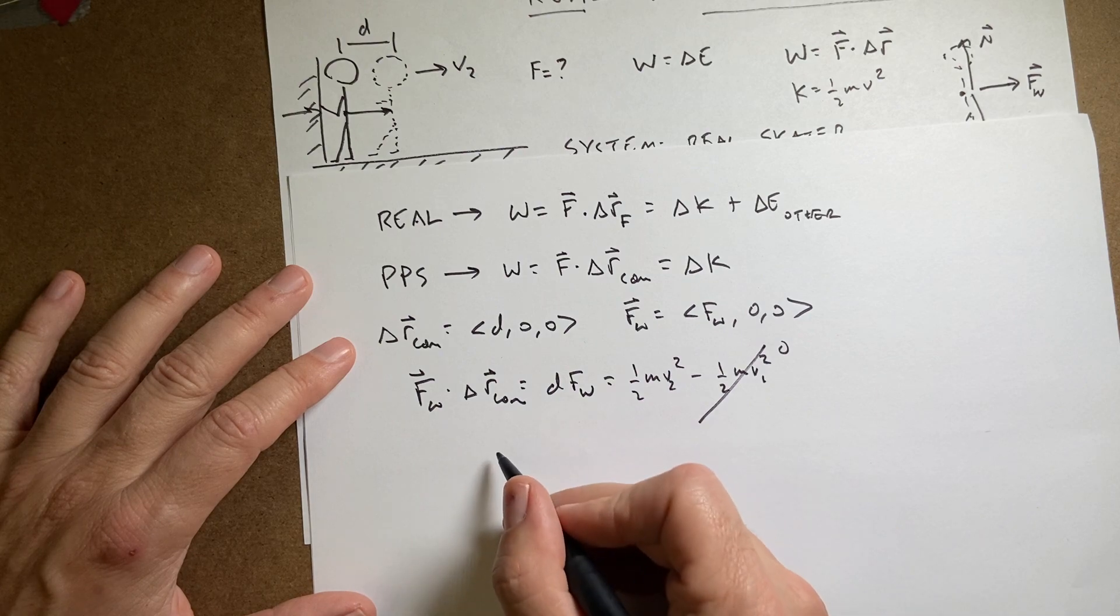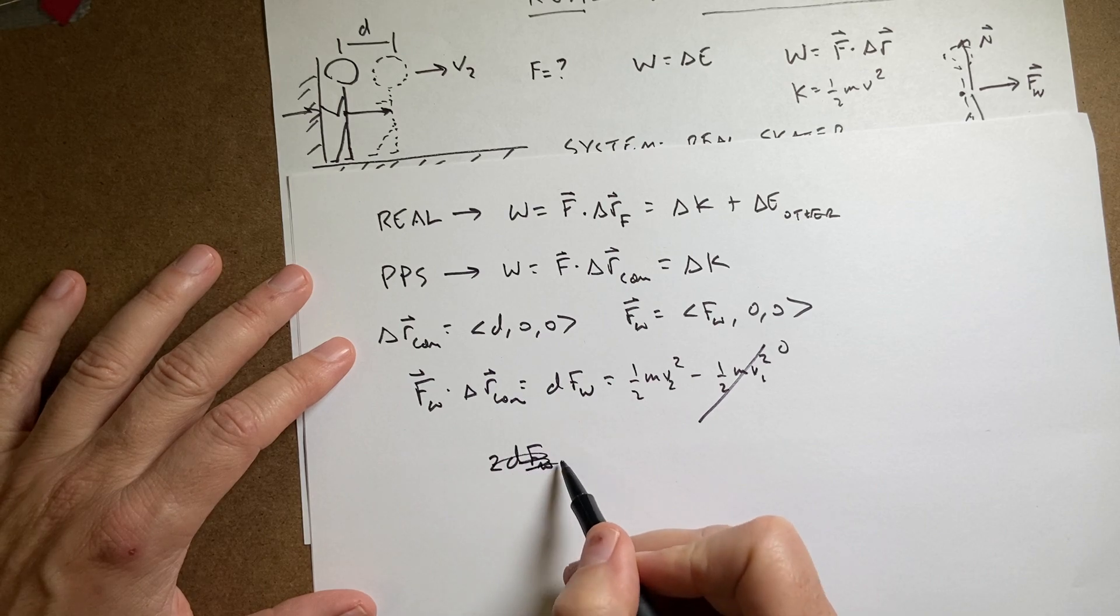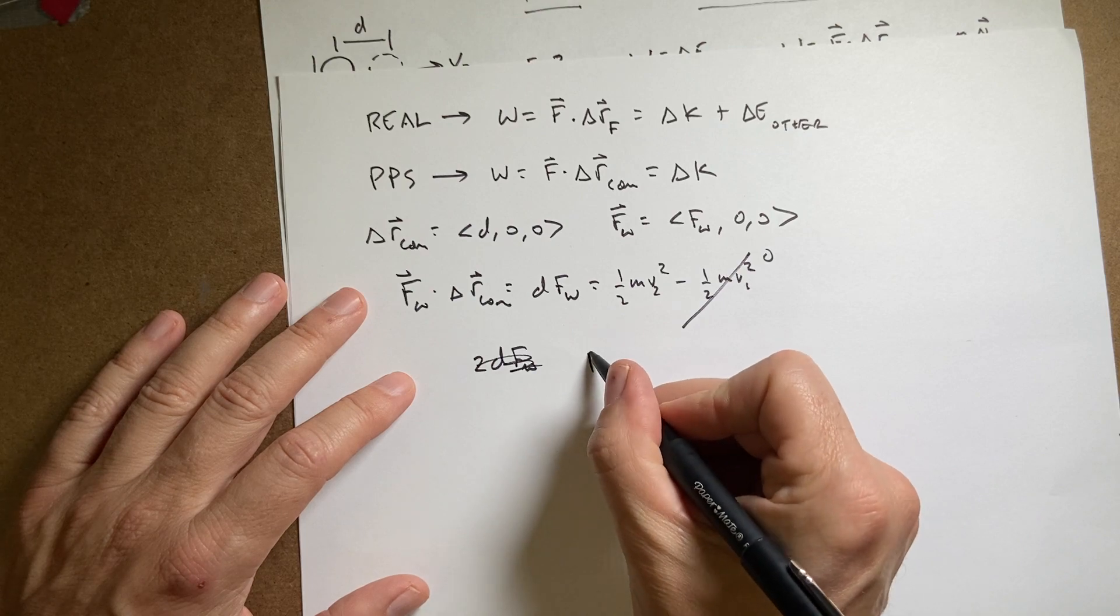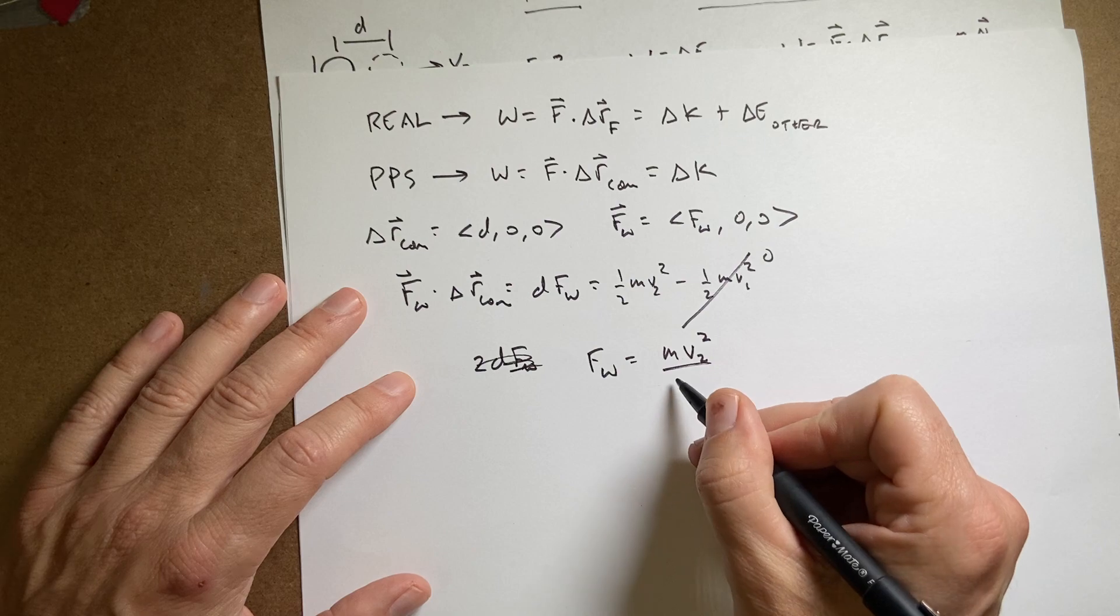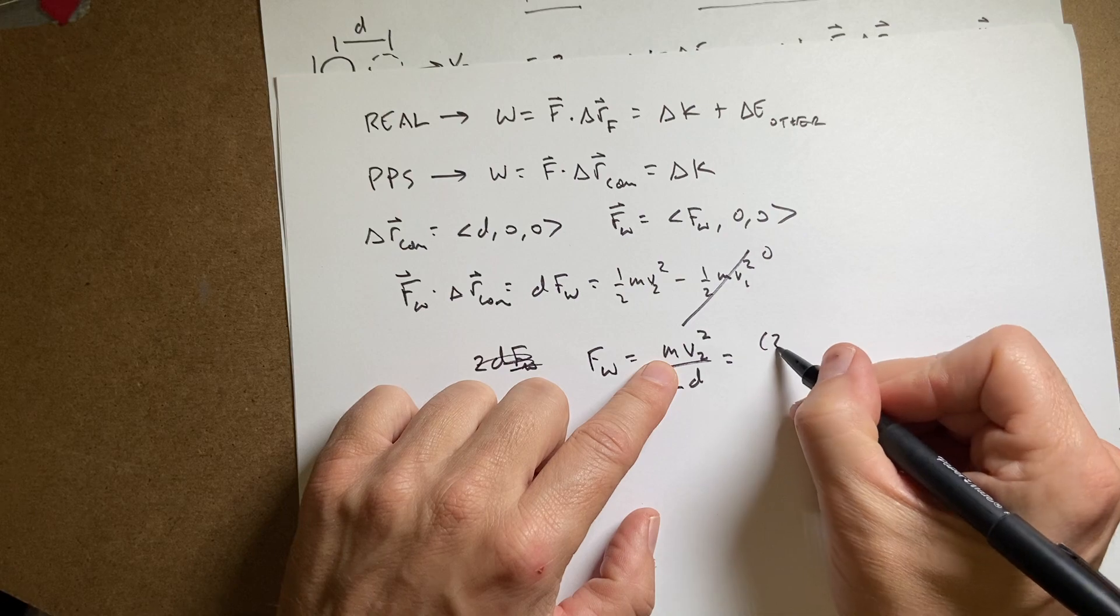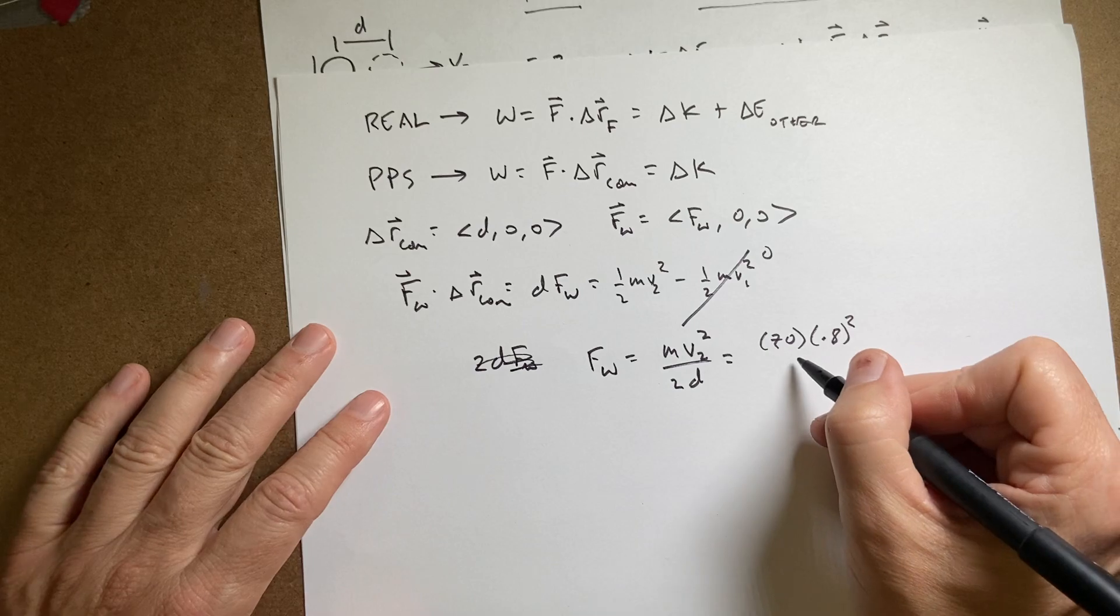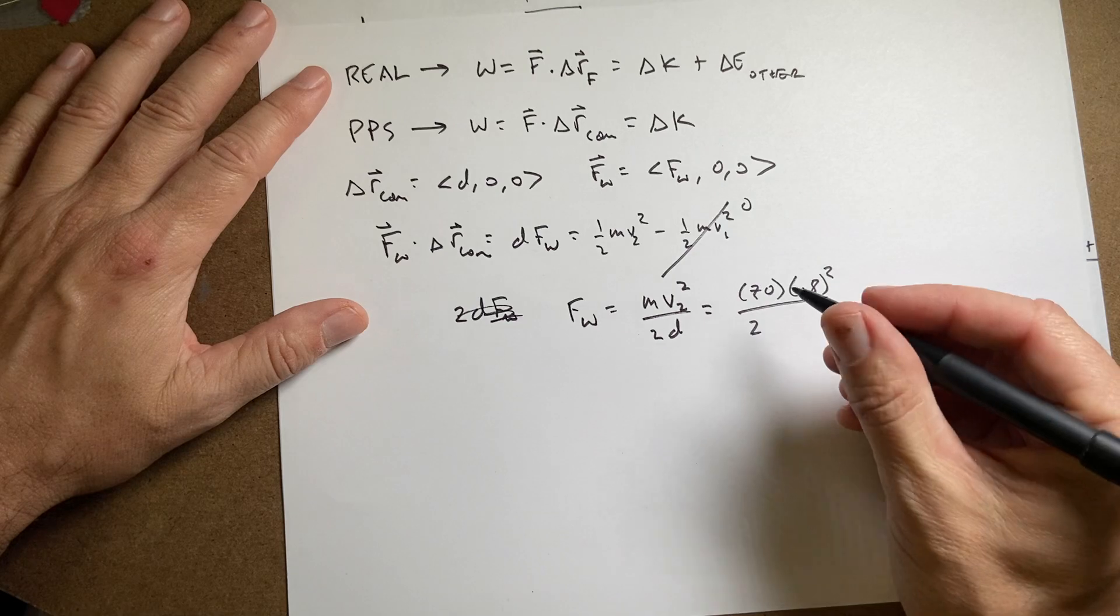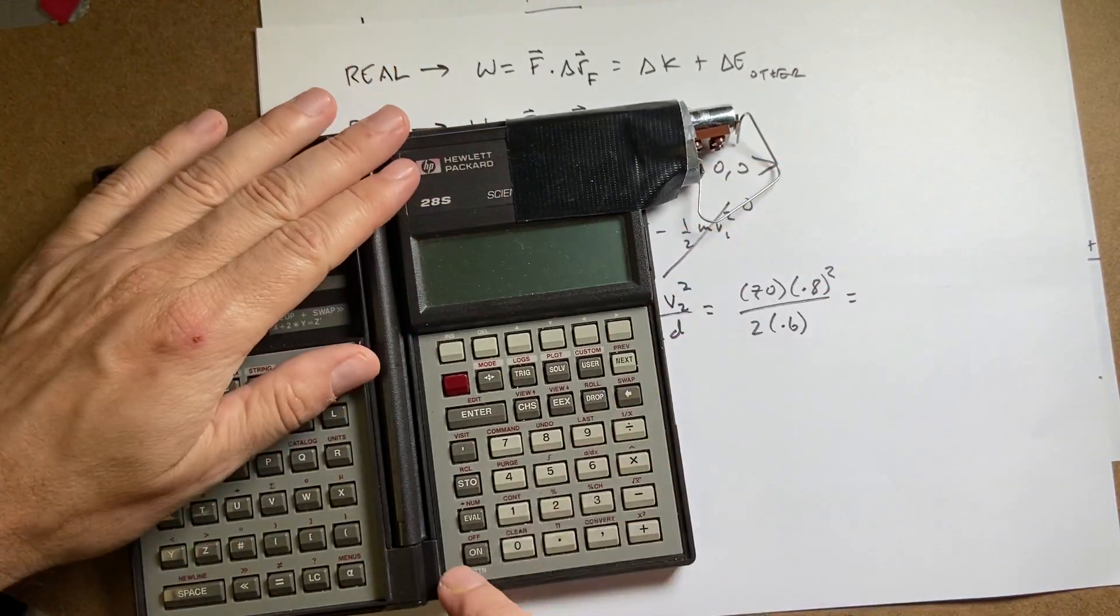So now I can solve this for V2. I'm going to multiply both sides by two and I get 2D FW. Oh, I'm sorry, I want to solve this for FW. I know the velocity. I'm going to solve this for the force of the wall. FW equals m V2 squared over 2D. And let's put that in our calculator. So I have the mass of 70, and leave off the units, velocity of 0.8 squared over 2 times, what does that say? 0.6. I'll put that in my handy dandy calculator.